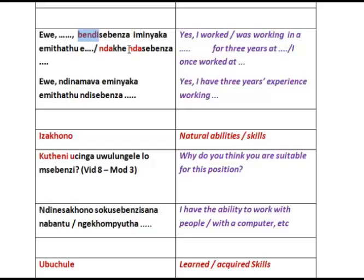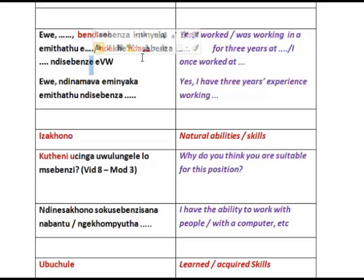There is also the other form of the past tense, which will be explained, because we are accustomed to the verb ending on 'e' for the past tense — for example, 'D7ze' — I worked at VW. There are therefore two forms of the past tense, and these will be explained in module 4. 'I have seven years experience working.'